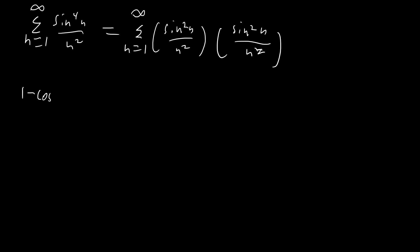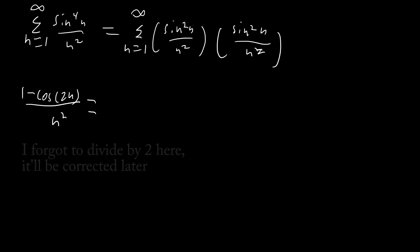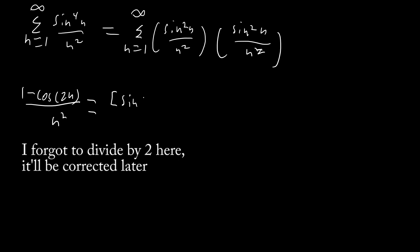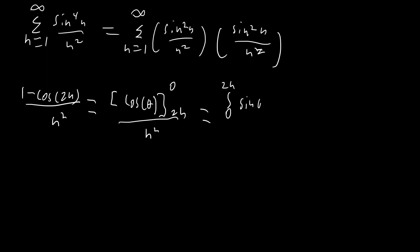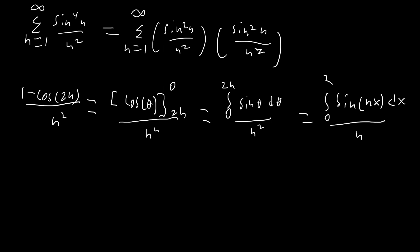Each of those are going to be 1 minus cosine of 2n over n squared, which is the same as cosine of theta evaluated at 0 and at 2n over n squared, which is equal to the integral from 0 to 2n of sine theta d theta over n squared. We're going to rewrite this as the integral from 0 to 2 of sine of nx dx over n, just substituting theta equals nx. Then we'll have that with two separate variables.